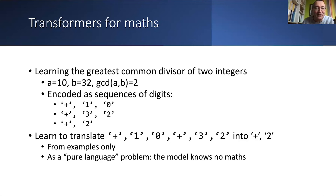Suppose you want to calculate the greatest common divisor of two integers, say 10 and 32 — the GCD is 2. You can encode 10, 32, and 2 as sequences of digits: plus 1, 0, plus 3, 2, plus 2. You would train the transformer to learn to translate 'plus 1, 0, plus 3, 2' into 'plus 2', just from examples, so the machine doesn't learn any mathematics — it's treated as a pure language problem.